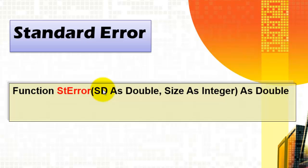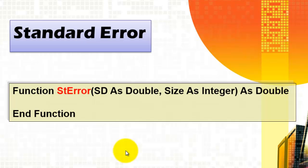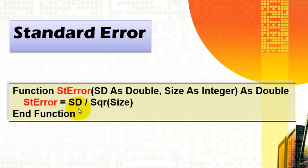The variable standard_deviation holds a double, and the variable size holds an integer — or a long if you want to, because an integer goes only to 32,000. But if you do, you have to declare that as long. At the end of the line, you type Enter and it automatically finishes the function. Inside the function, we are going to say what standard_error should do. So we type: standard_error equals the standard_deviation divided by the square root function of Visual Basic based on the size of your sample. That's the function we have now.